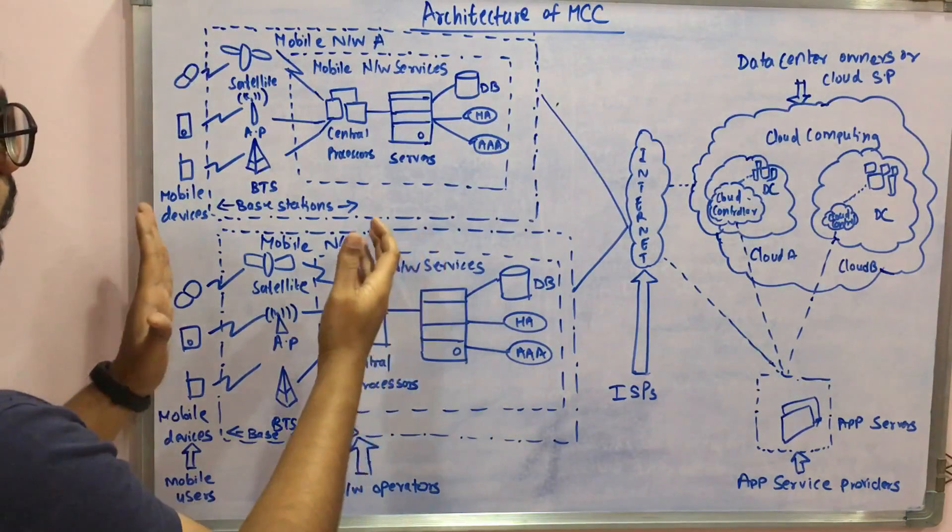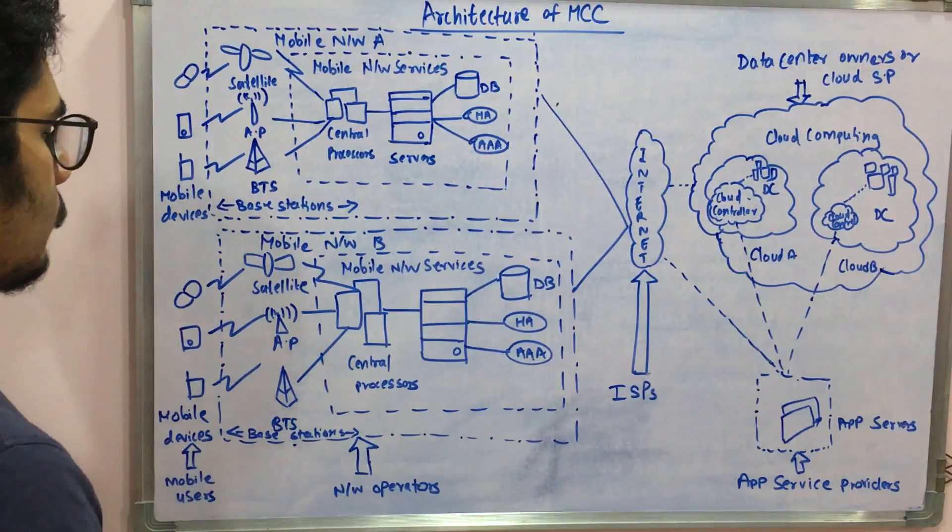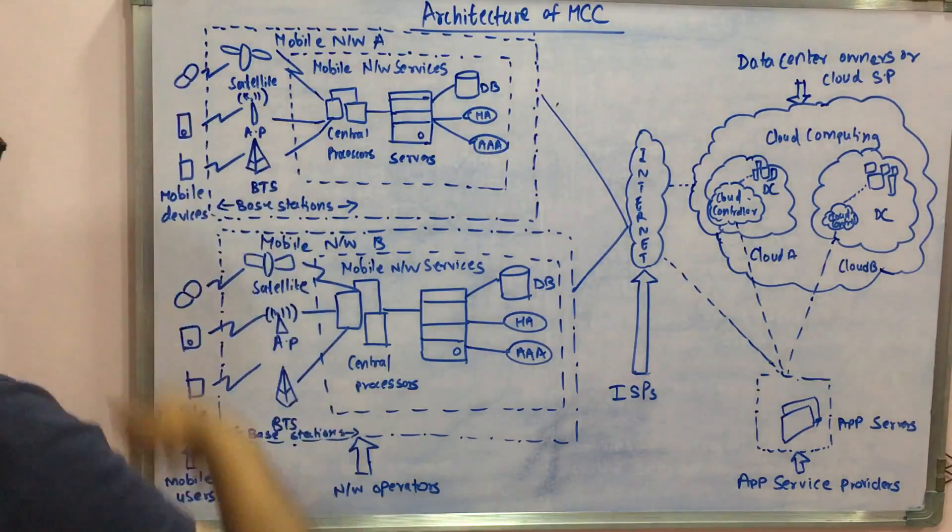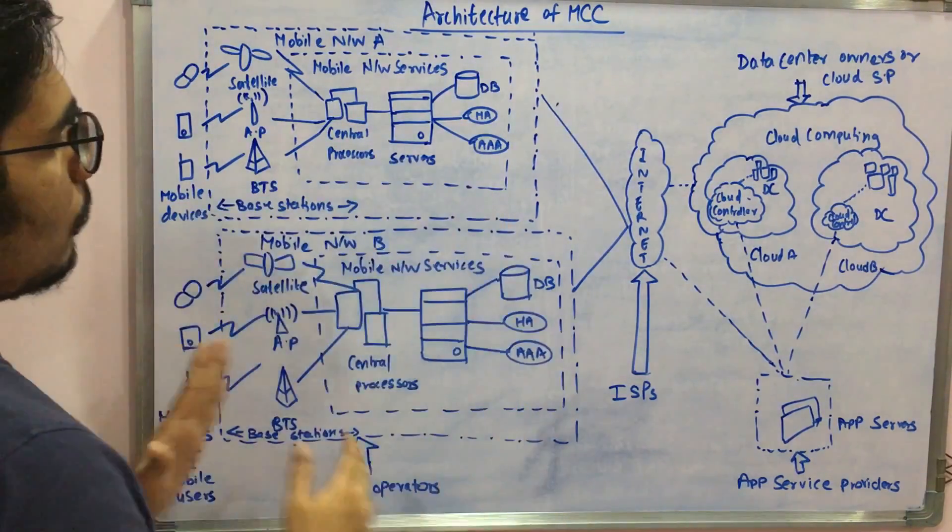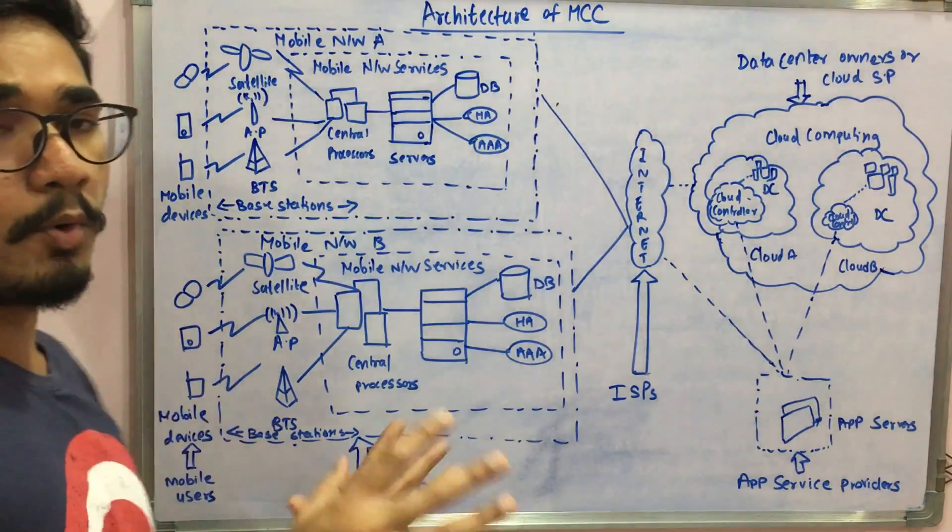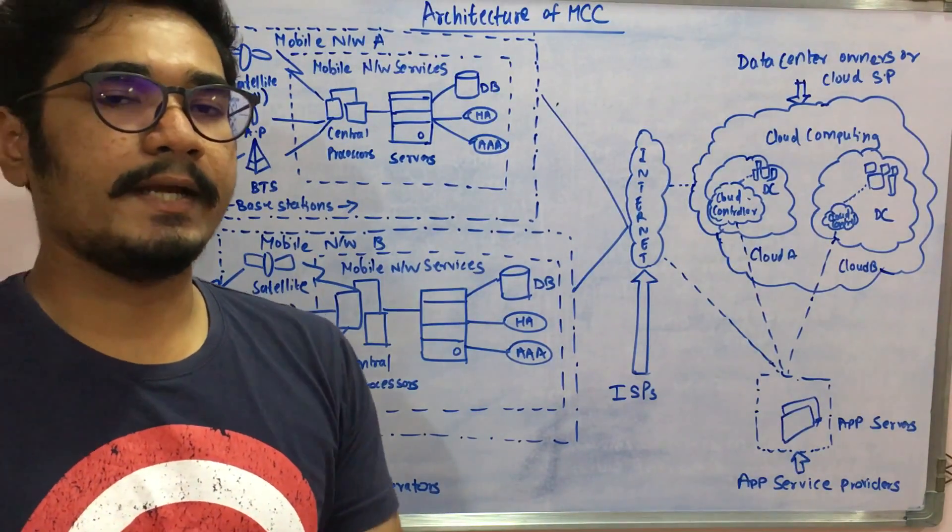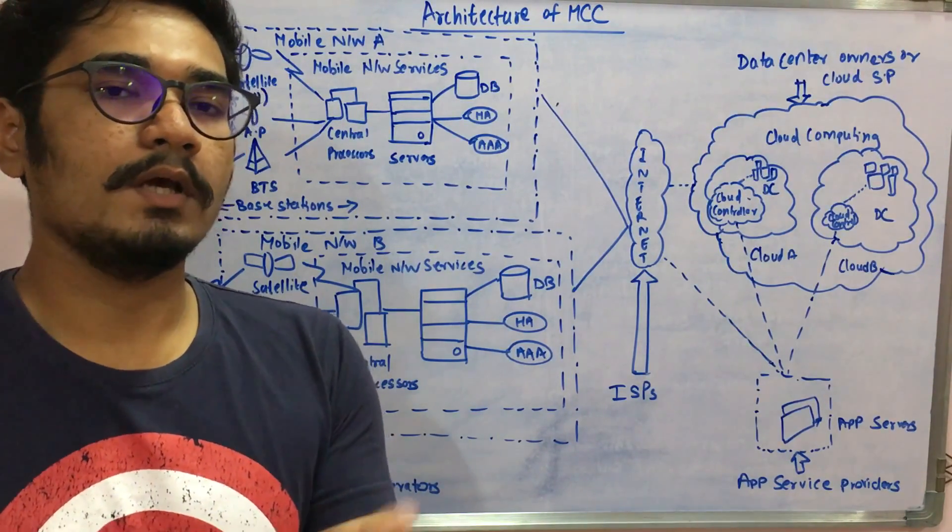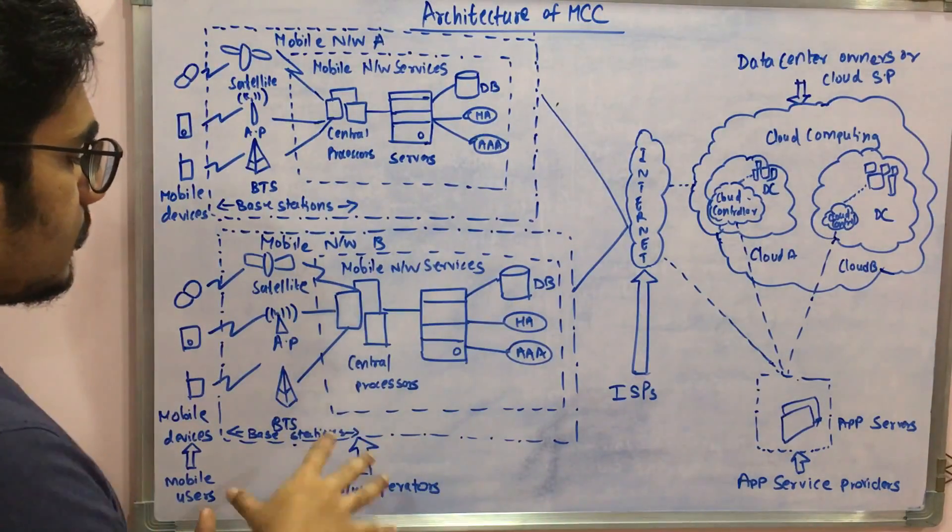Similarly, you have mobile network B with the same components. There may be n number of networks. You have all the mobile devices here, so mobile users will be there, and this entire mobile network can be summed to a mobile network operator. Mobile network operator could be your AT&T, Idea, Vodafone, BSNL and so on.